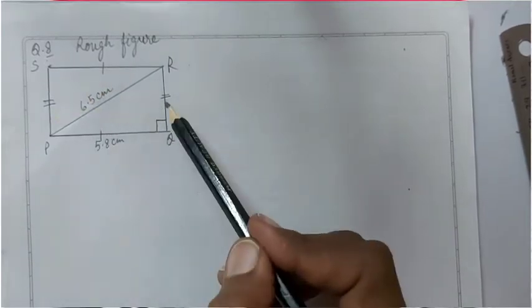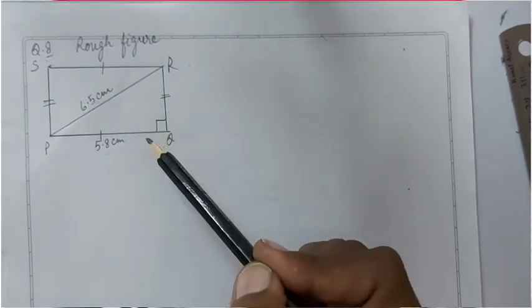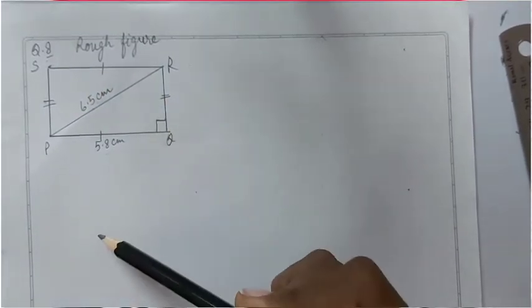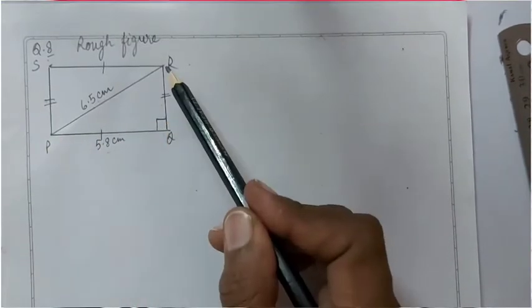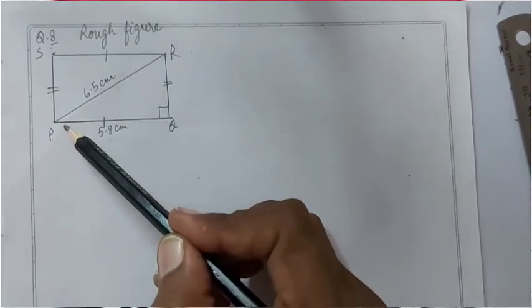As we know, opposite sides are equal and each angle measures 90 degrees in a rectangle. So we can construct triangle PQR.